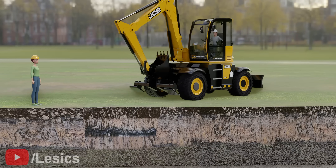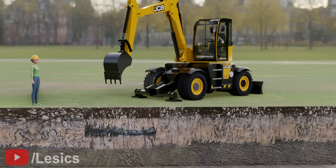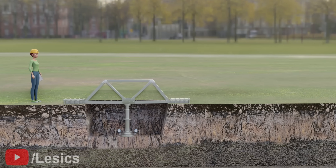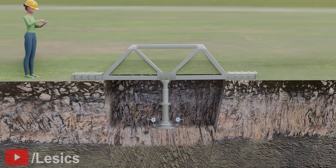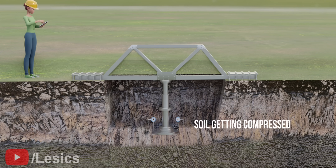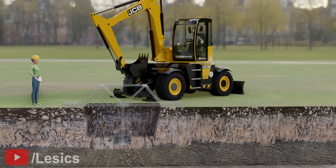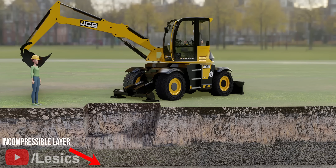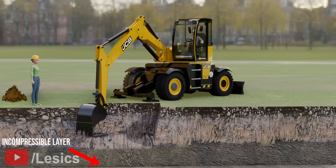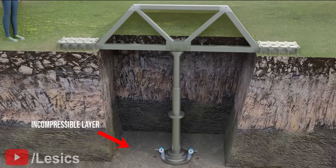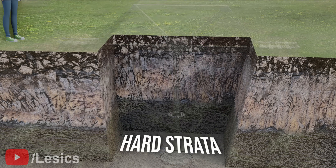Before understanding the design concept of the footings, you first need to learn something about the soil. Engineers should analyze whether or not the soil at the particular location is capable of bearing a calculated amount of load. If the soil is compressible under loading, excavation is done until you find the incompressible layer which can stand the loading. You can see the plate load test on this layer is not causing much compression. This layer of soil, in civil engineering, is called hard strata.